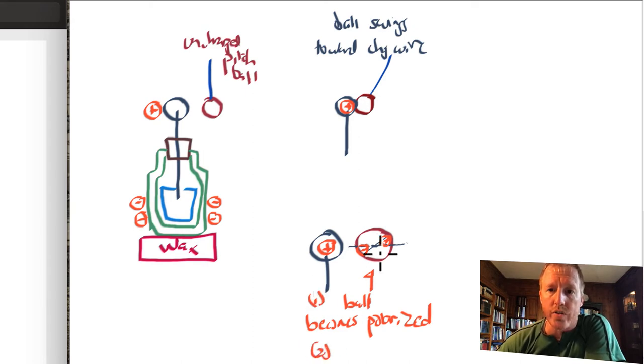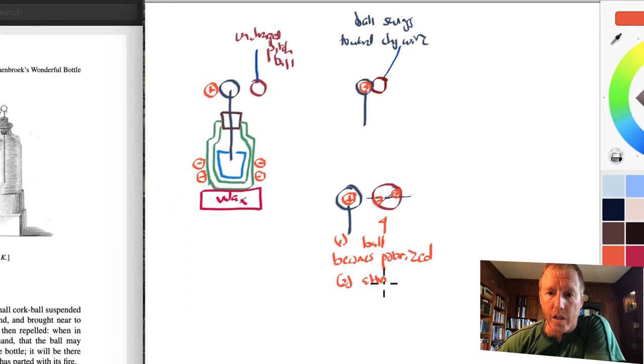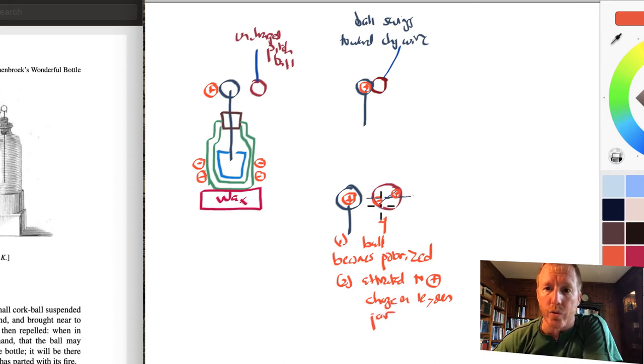Step two is that once it's polarized, it is attracted to the positive charge on the Leiden jar. Why would it be attracted? After all, it's still neutral. Well, the negative charge is attracted to the positive, and the positive is repelled from the positive, but they don't have equal strengths. Notice that the negative charge on the left-hand side is closer to that positive charge than the positive charge is to the positive charge. So the fact that this pith ball is attracted implies that there is a distance-dependent force. This negative charge is more strongly attracted to the positive than the positive charge on this side is repelled from the positive. So that is precisely why it swings toward it and touches it.